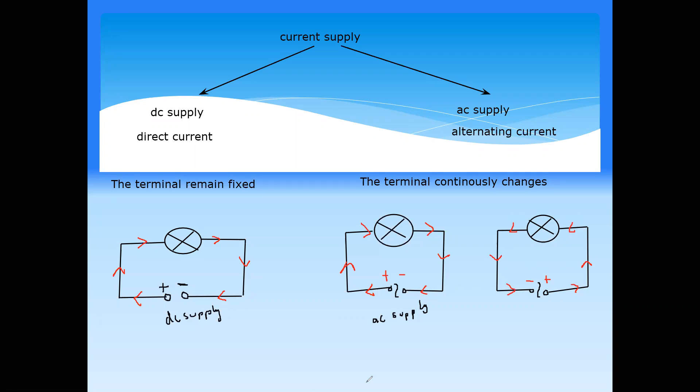Current does not change direction in DC supply, whereas current continuously changes direction in AC supply. The reason the current continuously changes direction in AC supply is because the positive and negative terminals are not fixed — they are continuously changing, so the direction of flow of charges also changes. In DC supply, the direction of the current does not change because the terminals remain fixed.